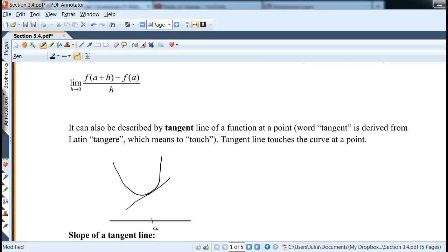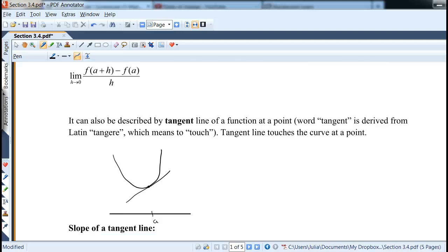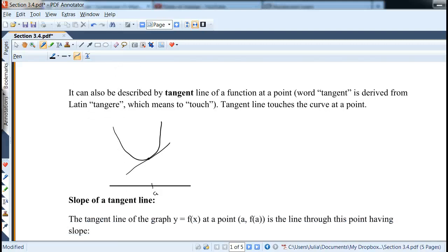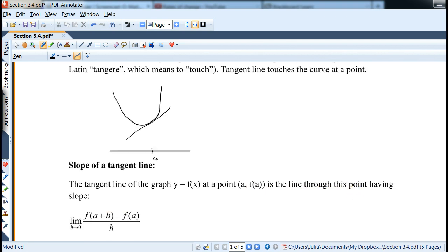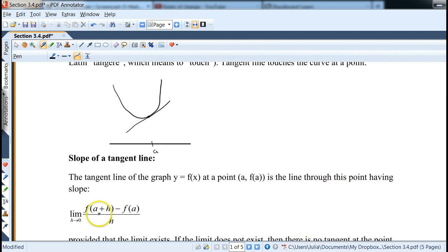Whereas with any function may not be as simple, which is why we use the idea of a line or we keep going back to the idea of a slope. So the tangent of a line of the graph of y equals f of x at a point of a f of a is the line through this point having the slope, which is defined as limit as h goes to 0.